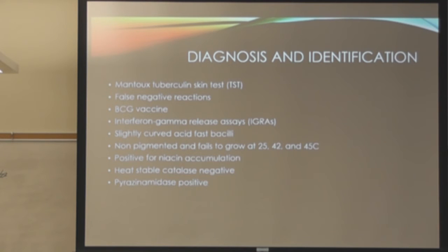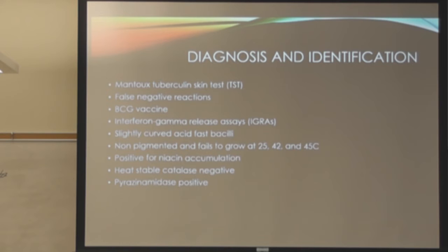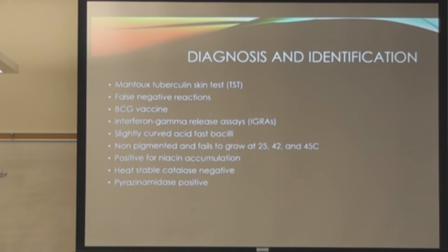For diagnosis and identification, the go-to is the TST skin test, which determines whether an individual has been exposed. The site is read at 48 hours to check for redness. You can get false negative reactions due to a suppressed immune system or recent or old infection. There's also a vaccine. The IGRA is a blood test to detect tuberculosis infection. Organisms are slightly curved, acid-fast rods, non-pigmented, and fail to grow at various temperatures — usually around 35 to 37 degrees.